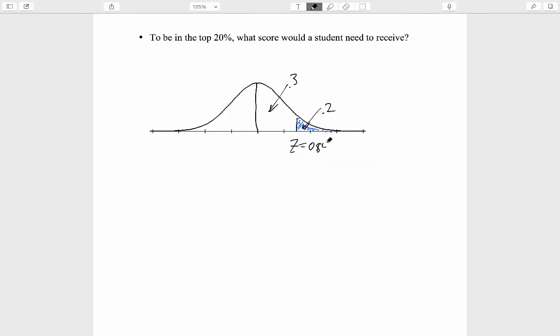So z equals 0.84. 0.84 standard deviations above the mean is the cutoff between the 30% of students who are above the mean but below the cutoff and the 20% of students who are above the cutoff.